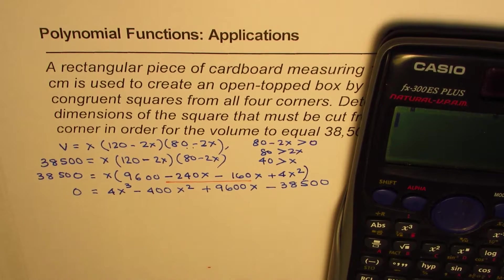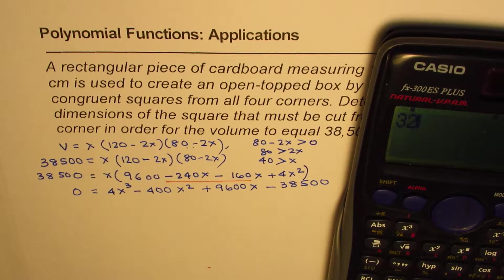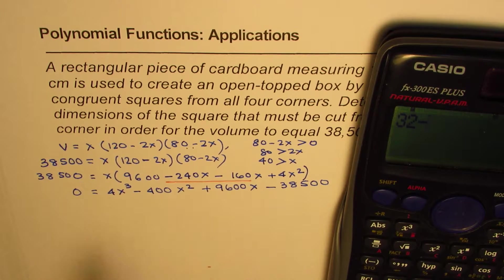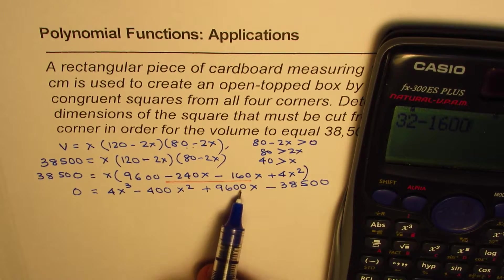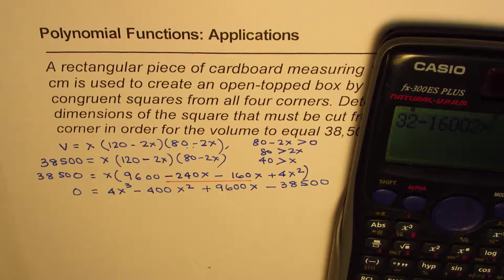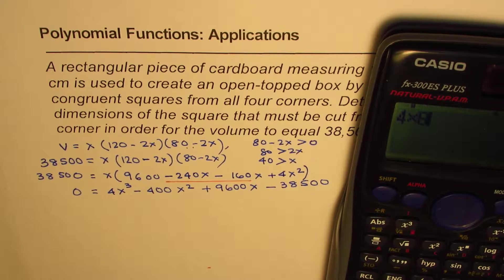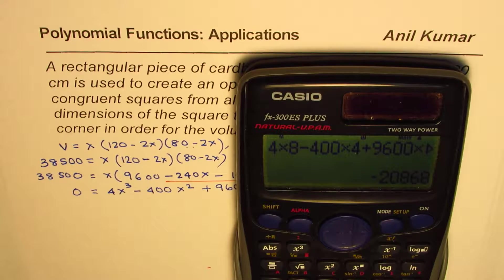So if I write 2 here, so I get 4 times 2 cubed is 8, 4 times 8 is 32, minus 2 squared is 4, 4 times 400 will be 1600. If I write 2 here, let me redo this calculation. So we have 4 times 2 cubed is 8, minus 400 times 4, plus 9600 times 2, minus 38,500. And that gives us a value which is negative 28,600, not 0. Let's try another value.